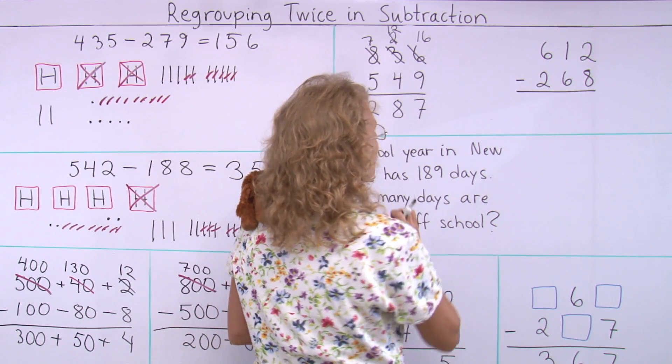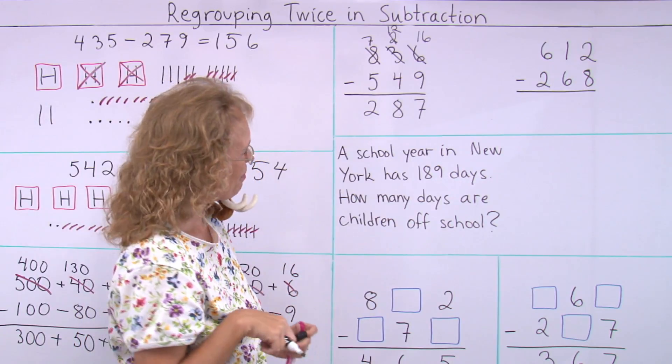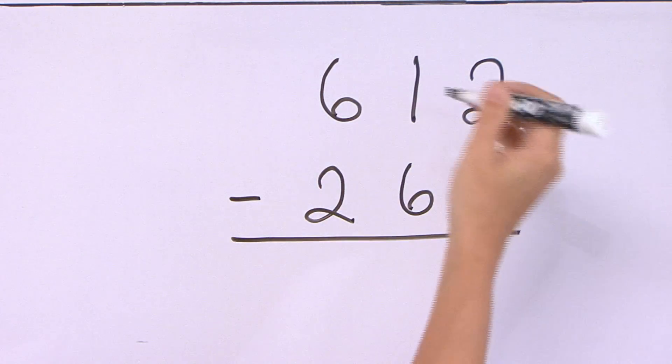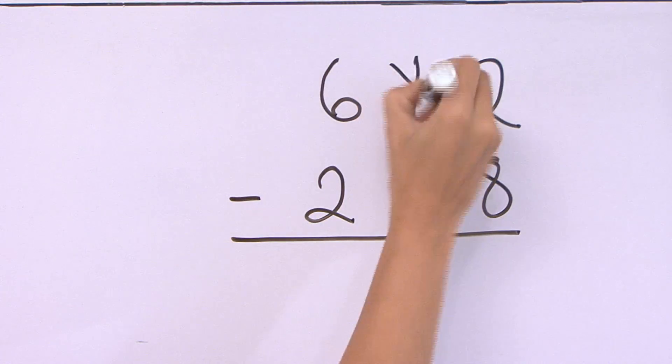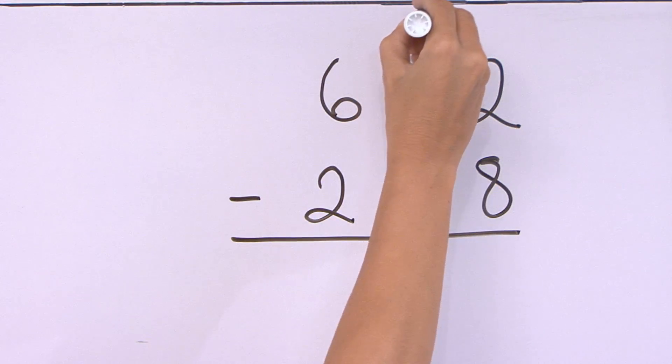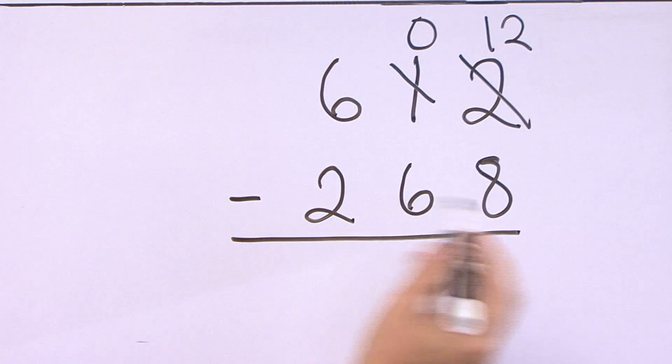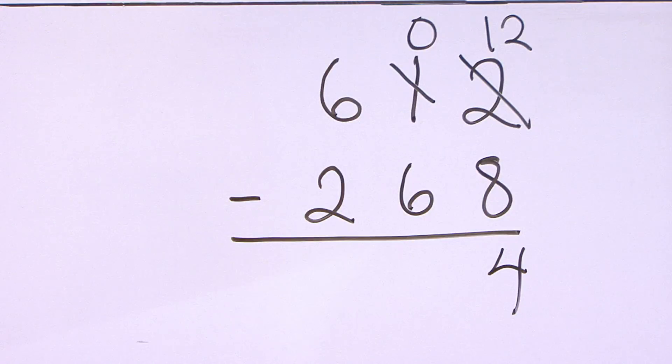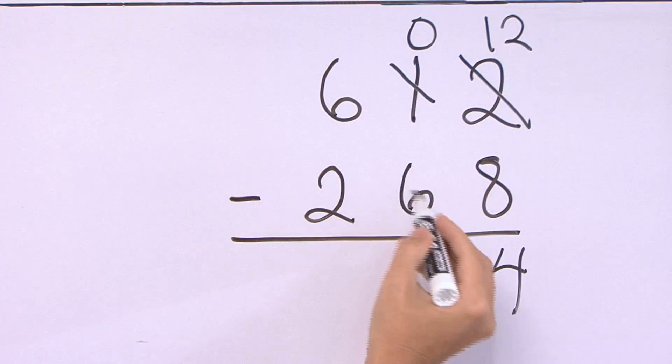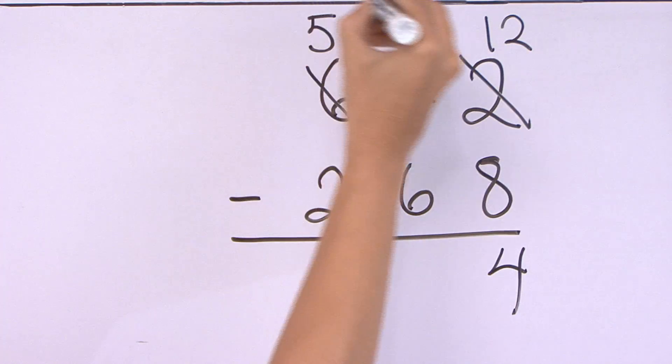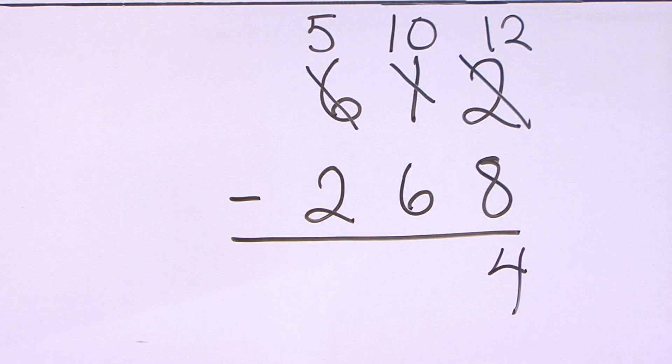And now, one more subtraction problem to practice. Two minus eight. I need to regroup. I take this only ten, leaving zero tens. But here, I get twelve. Twelve minus eight. Four. Zero minus six. I cannot do that, so I take one of the hundreds, and I get ten tens. Ten minus six is four, and five minus two is three.